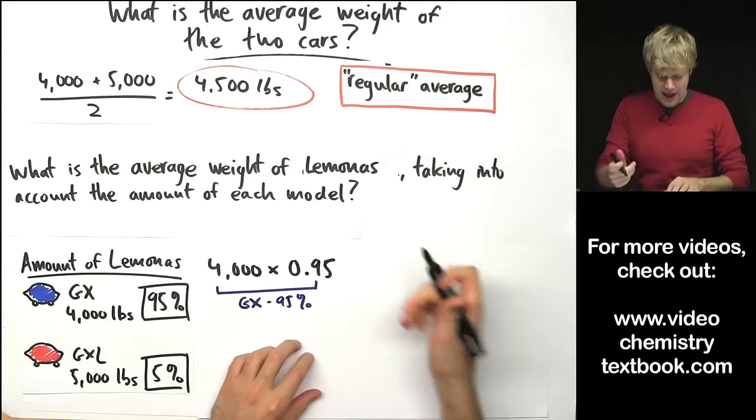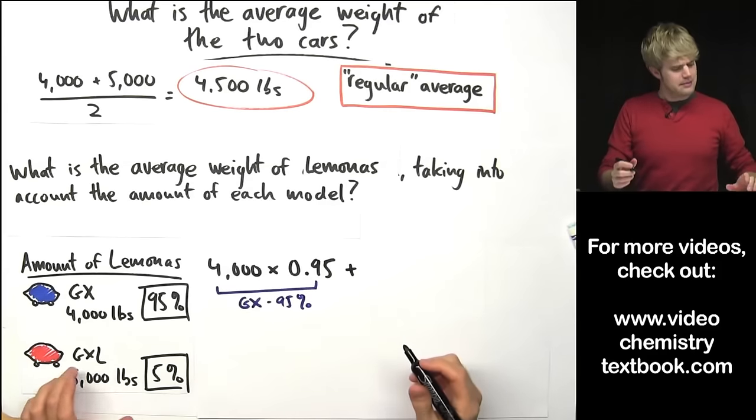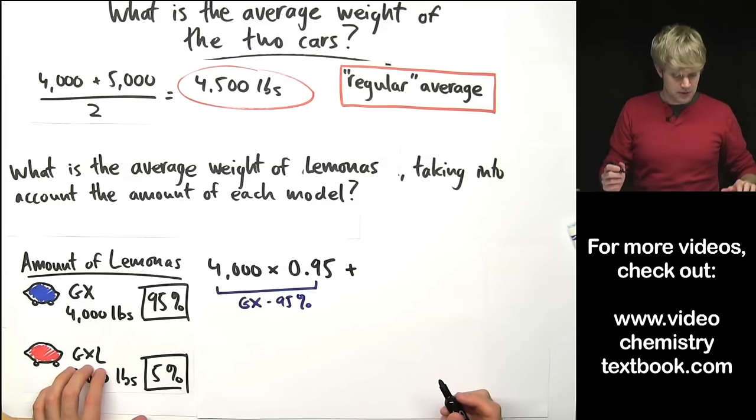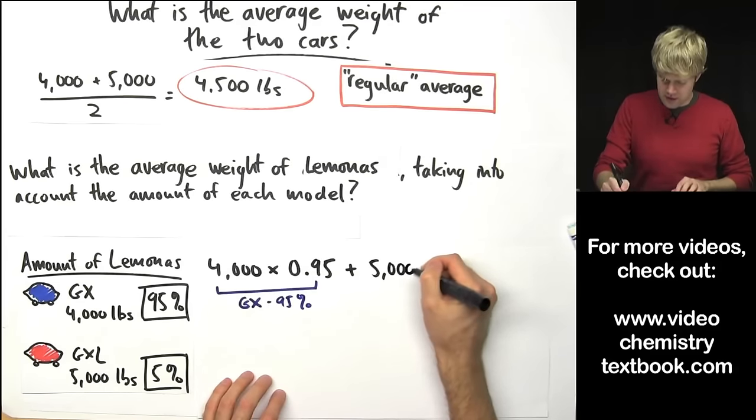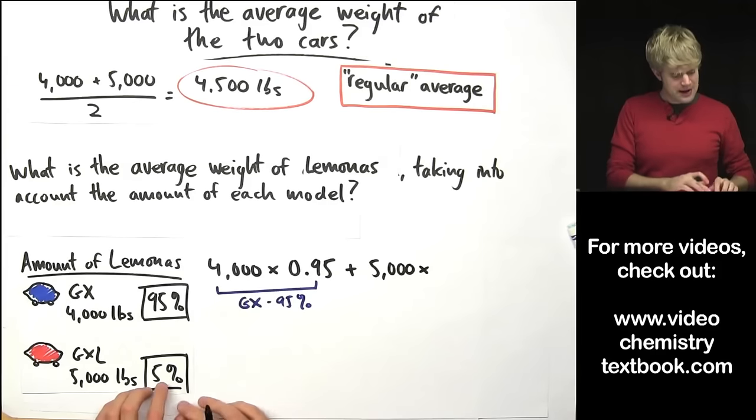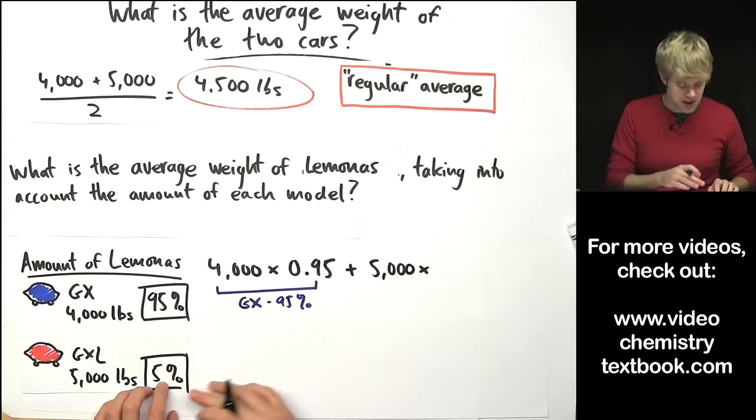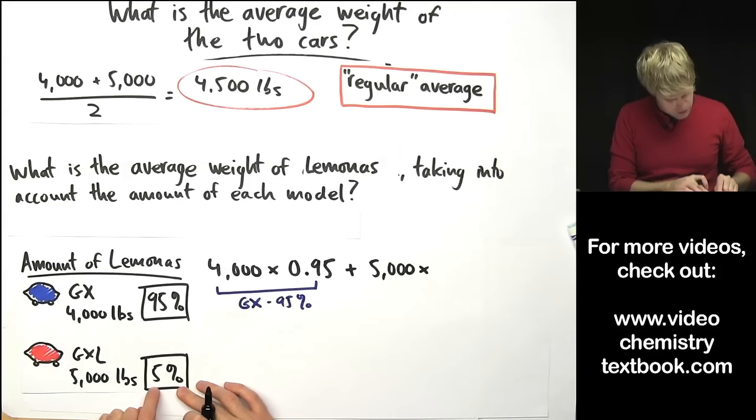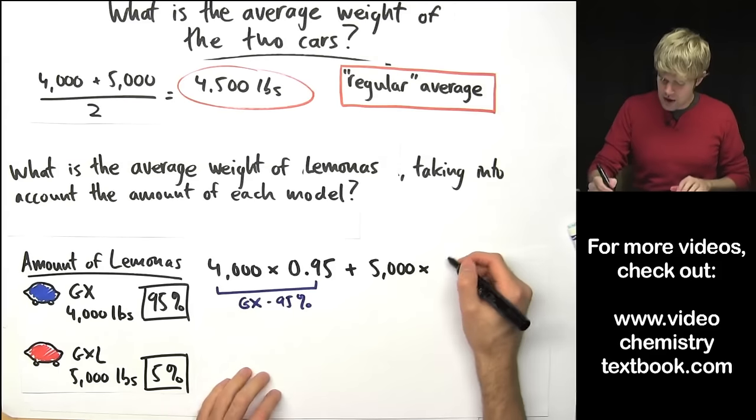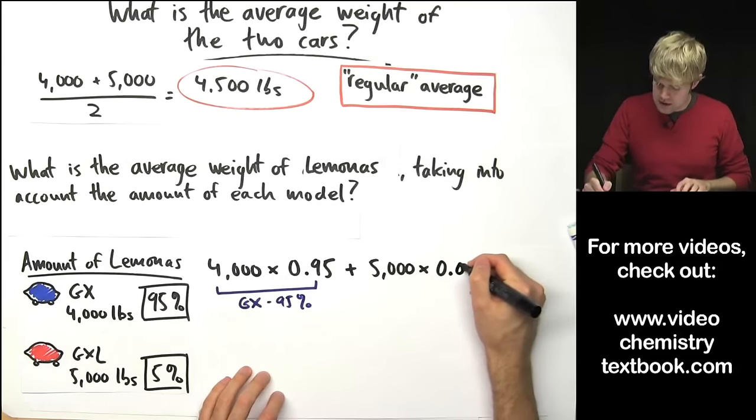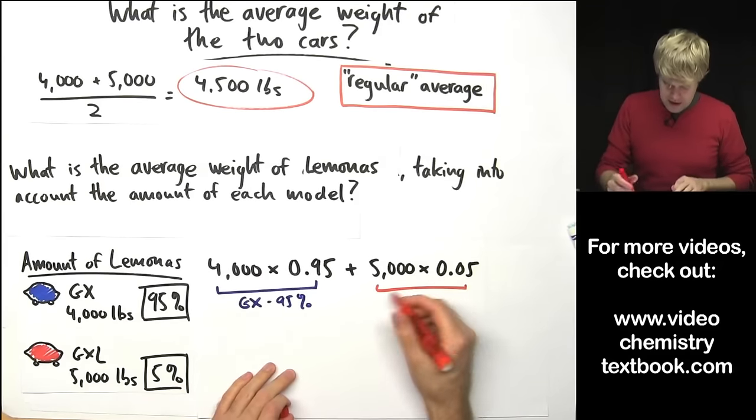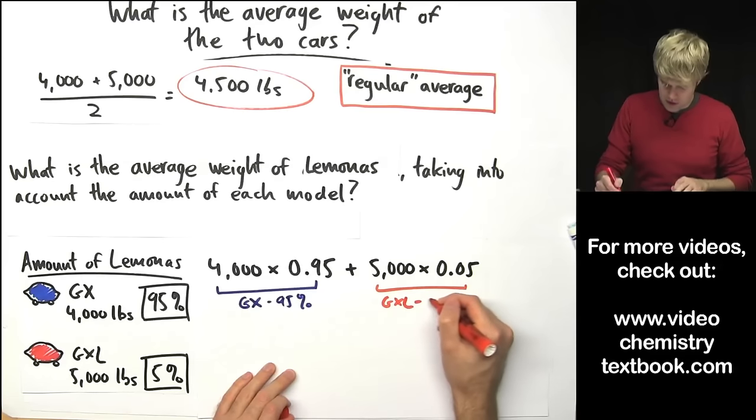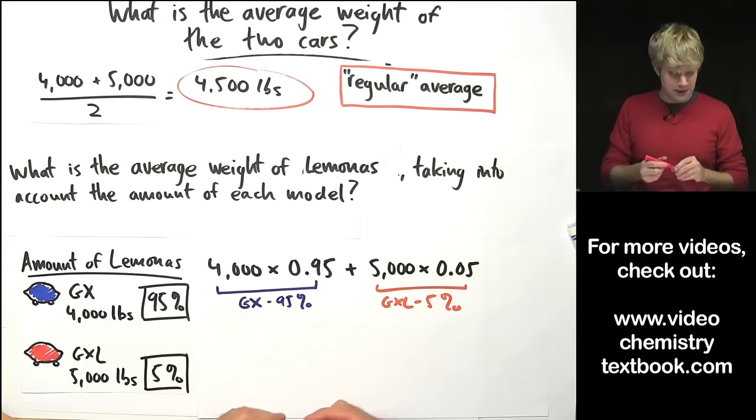Now I'm going to take that and I'm going to add it to the amount that I have of the GXL. So I'm going to take its weight which is 5,000 pounds and multiply by its abundance also expressed as a decimal. So again the decimal places here and we move it two spaces to the left so it has 0.05 and this right here is the GXL which accounts for 5% of my total.